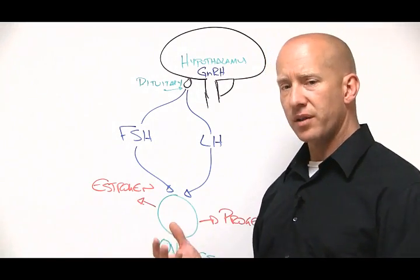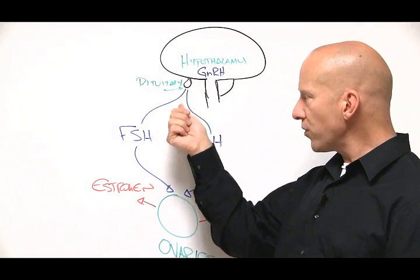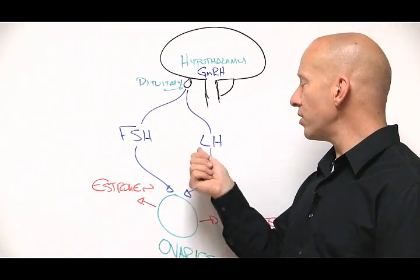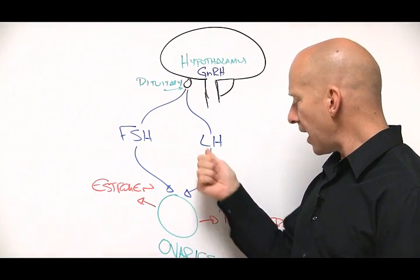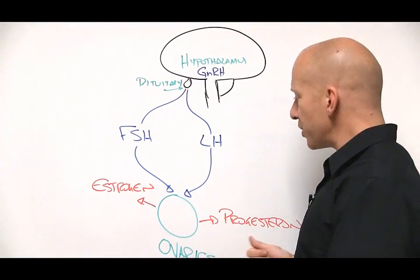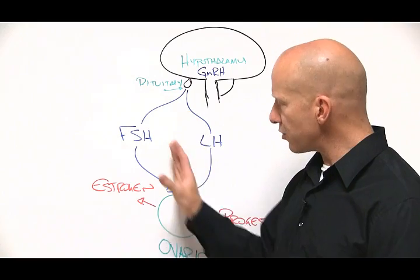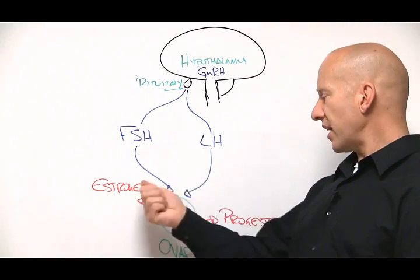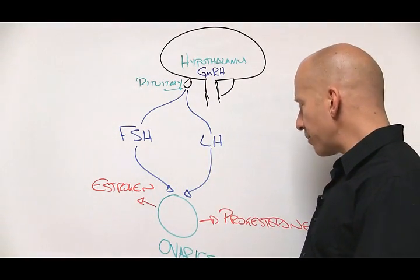Then in the second half of the month, when ovulation is taking place, the pituitary also makes another hormone called luteinizing hormone, or LH. LH tells the ovaries then to make progesterone. So the first half of the month is mostly estrogen and FSH. The second half of the month is mostly LH and progesterone.